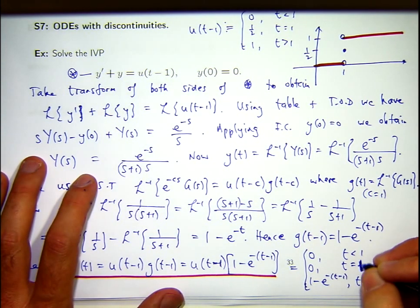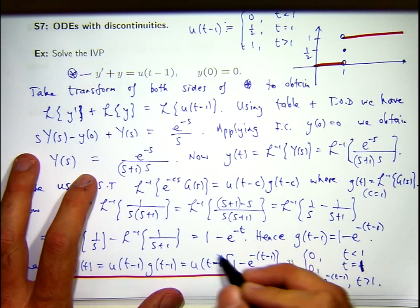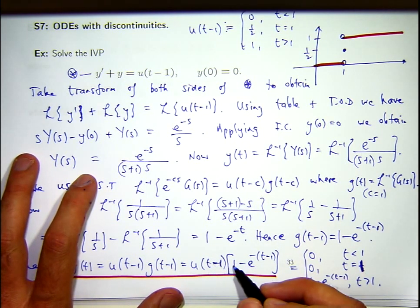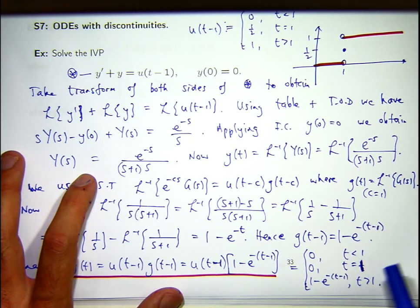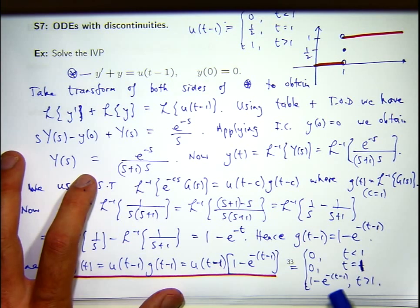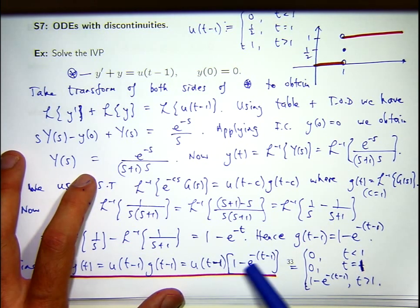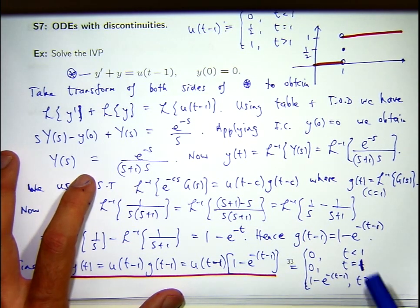And for t to the right of 1, this is 1, and this will just stay the same.